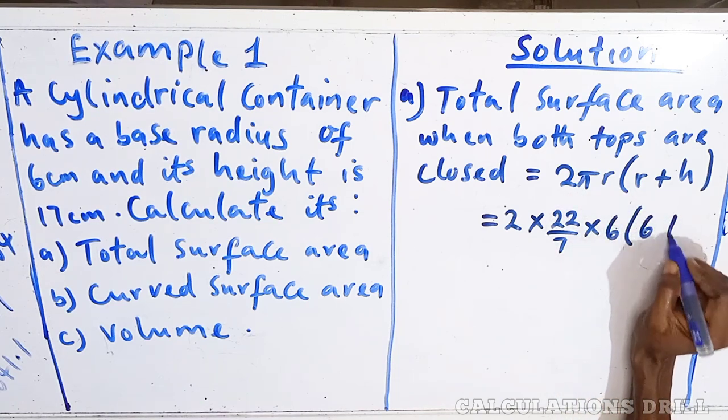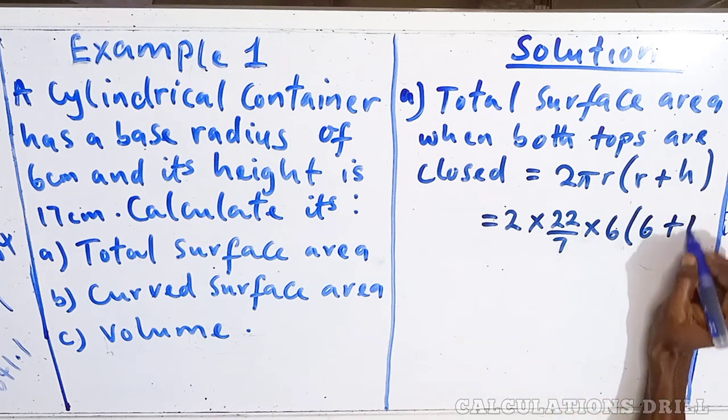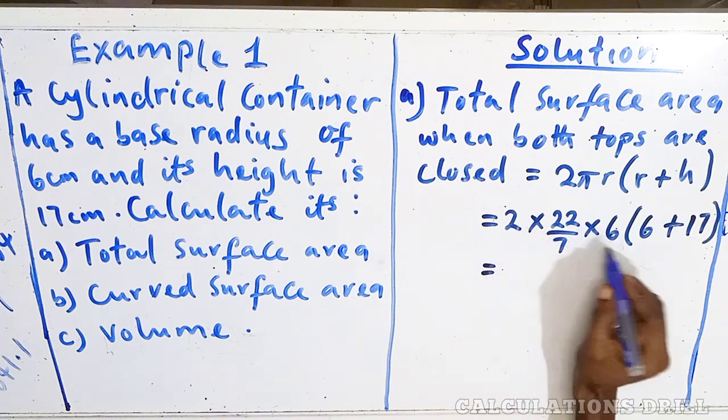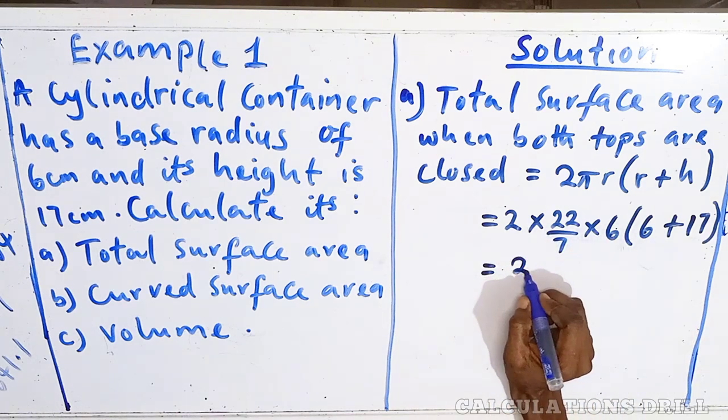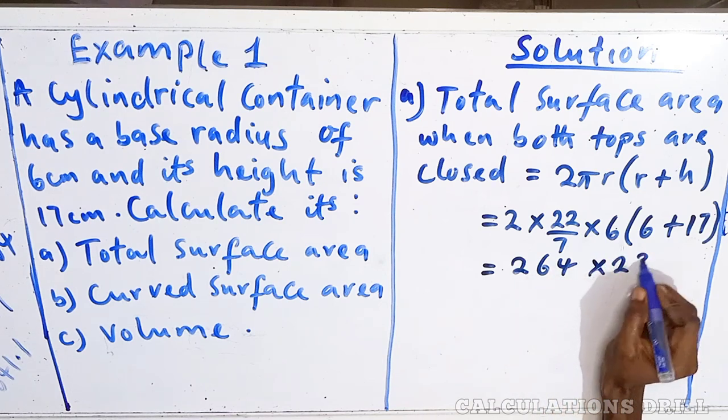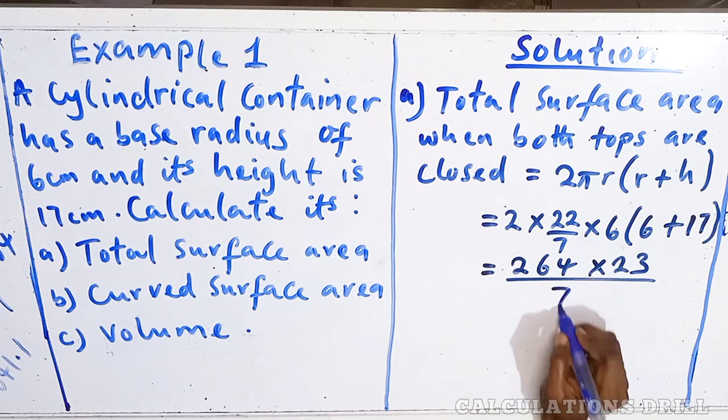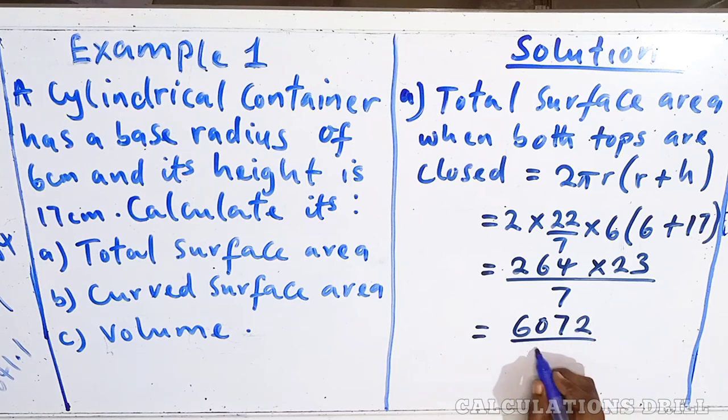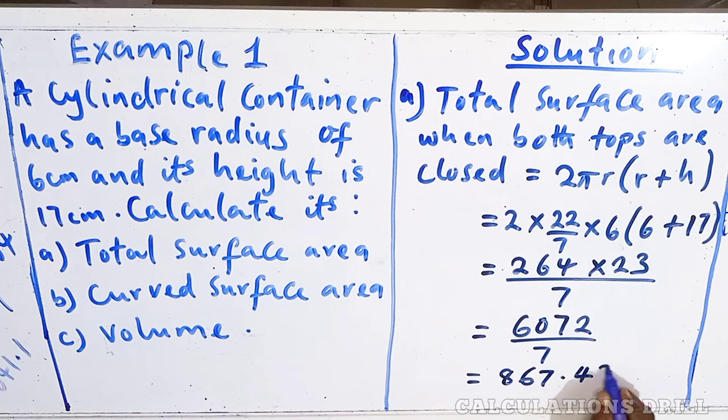Then, into bracket 6 plus 17. Our radius is 6, while our height is 17. When you multiply everything, that will give you 264 times 23/7. And our final answer is equal to 6072/7. When you use your calculator and divide that, you'll get 867.43 cm². The unit is very important.